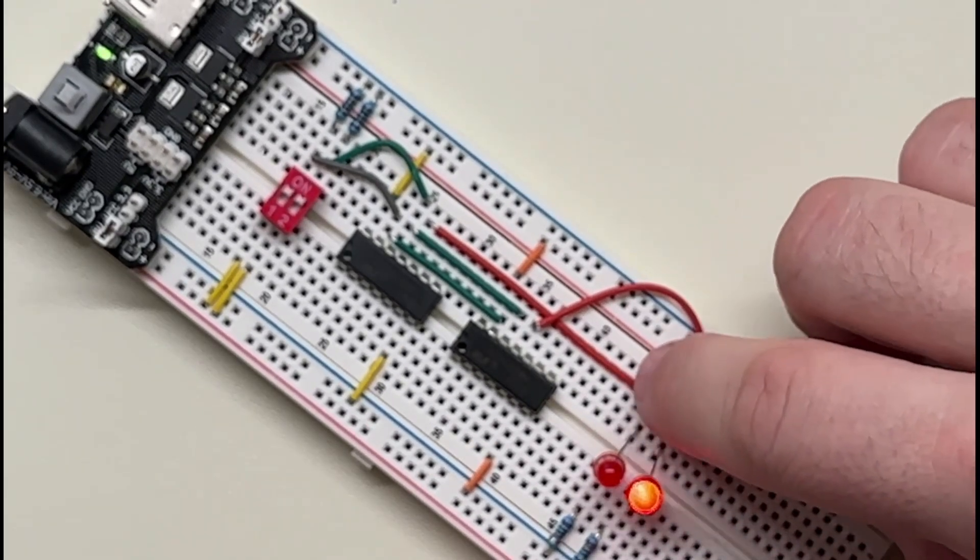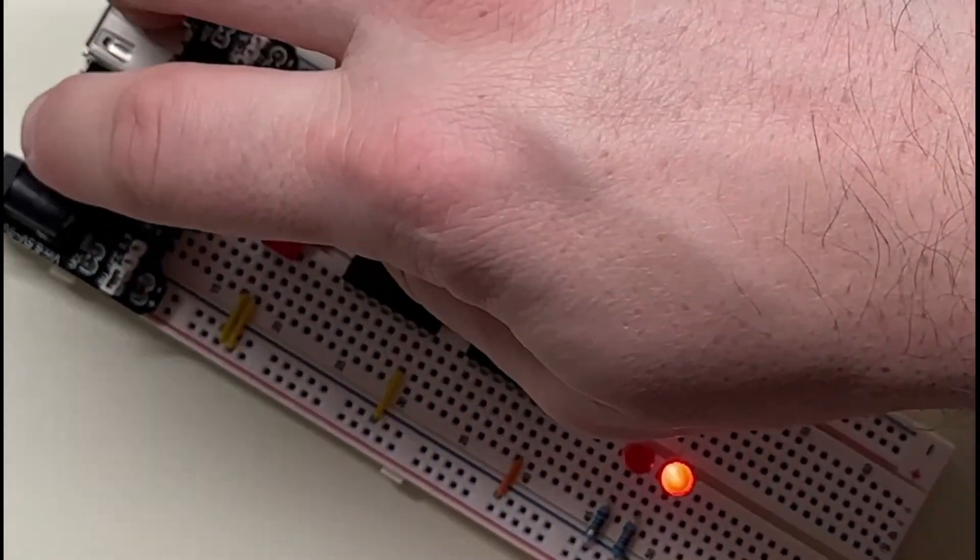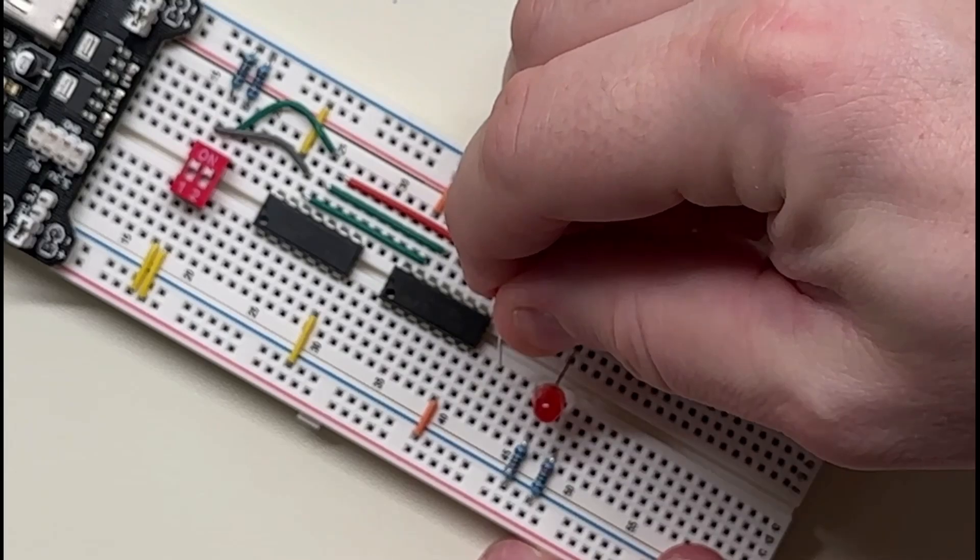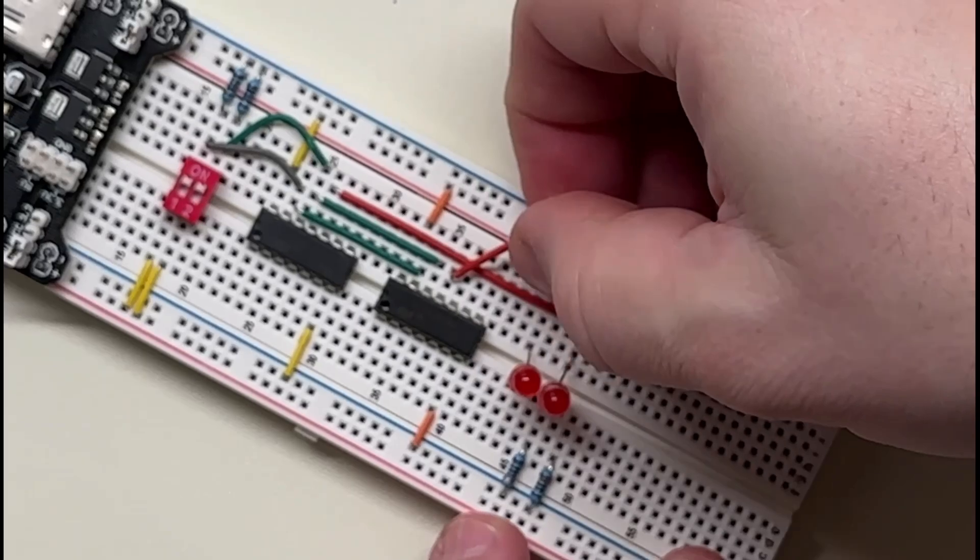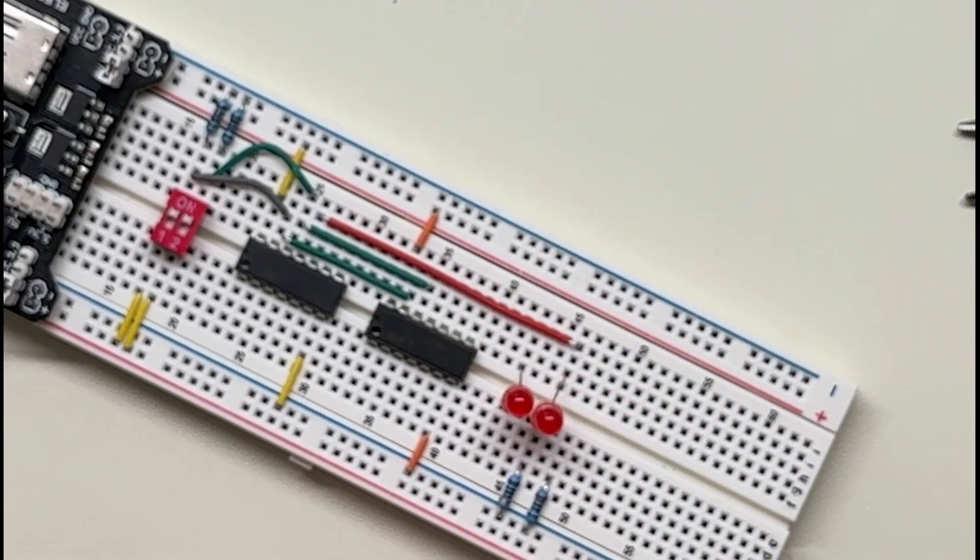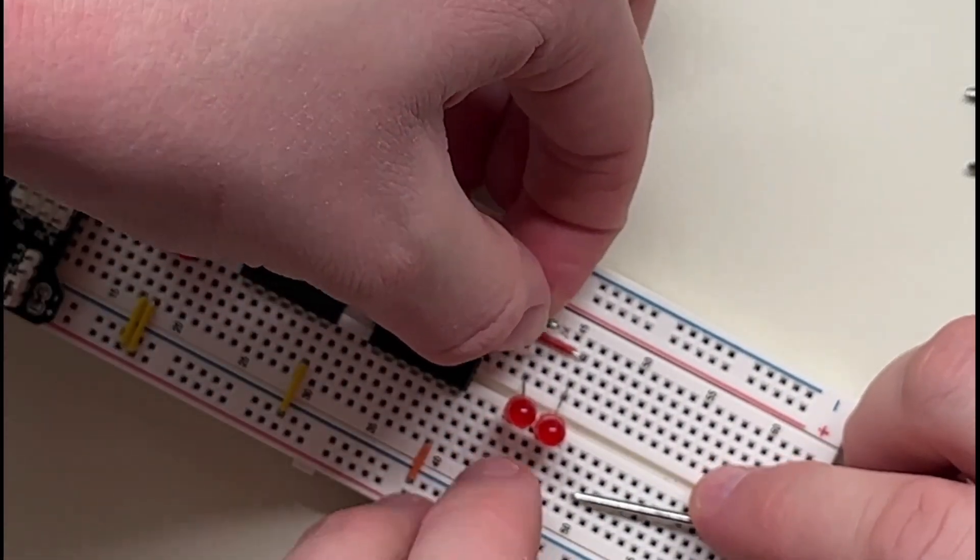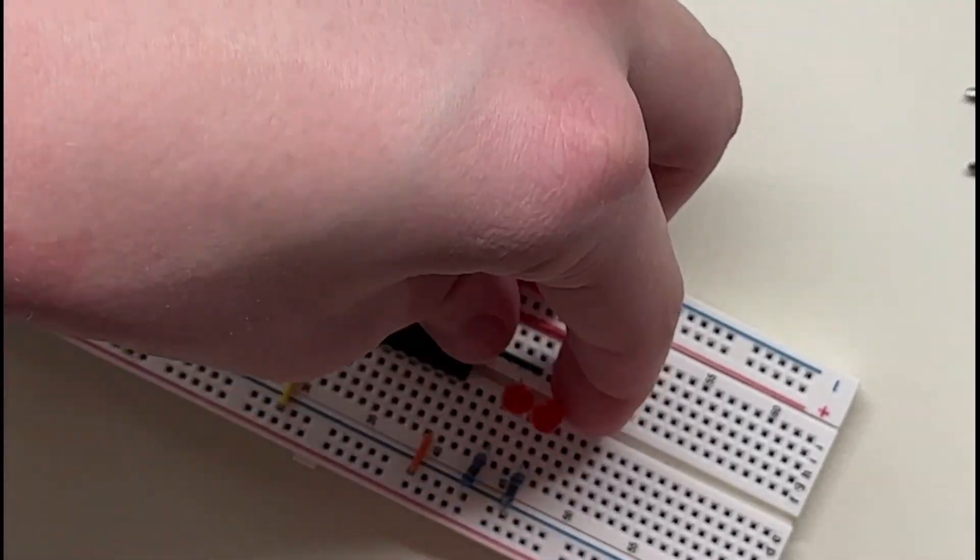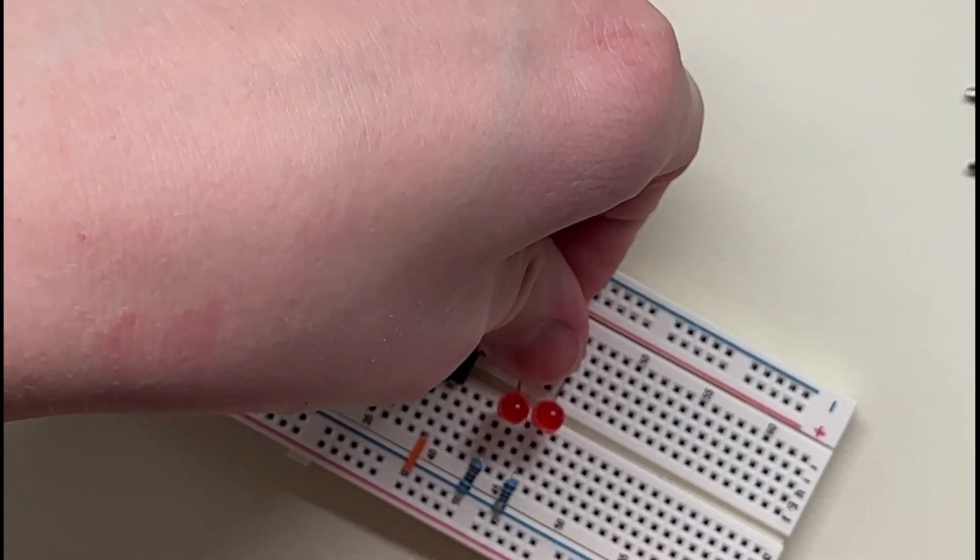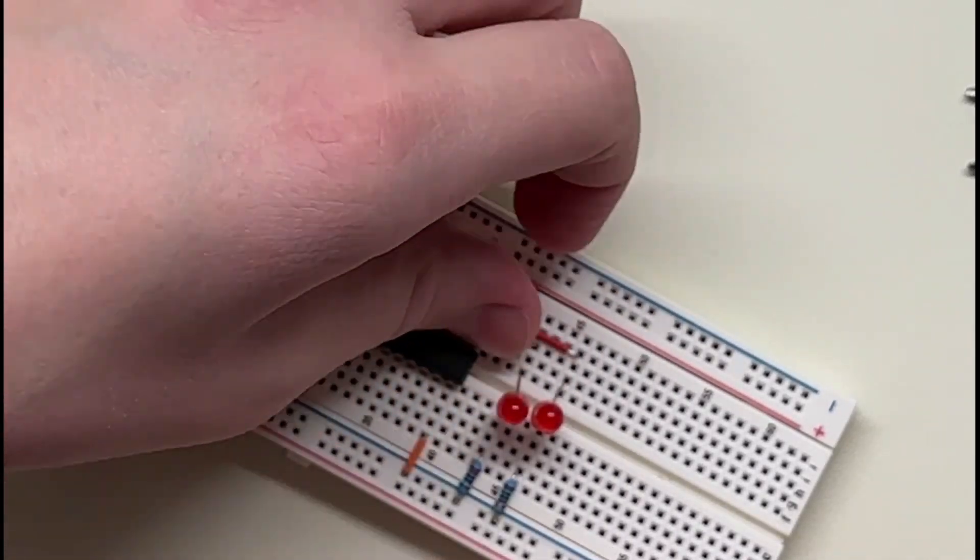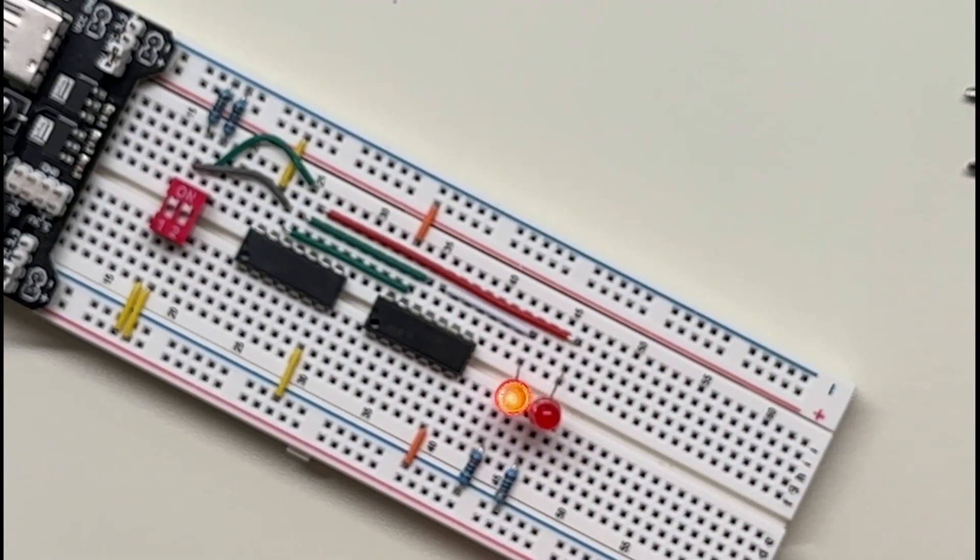Well, we could fix that by just swapping them. Or let's just move it. We'll just do this, and that way we can get rid of this wire and get a shorter wire that might fit better. And we'll take this resistor and move it over here. Beautiful. All right, still works. But now I think it's in the correct order.